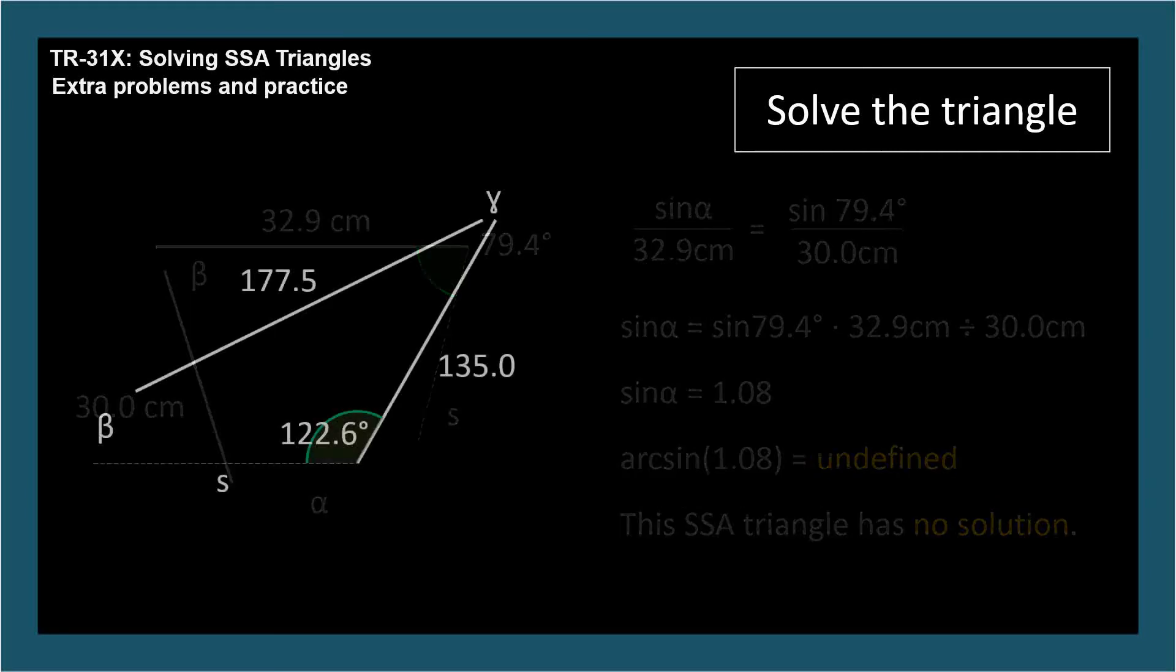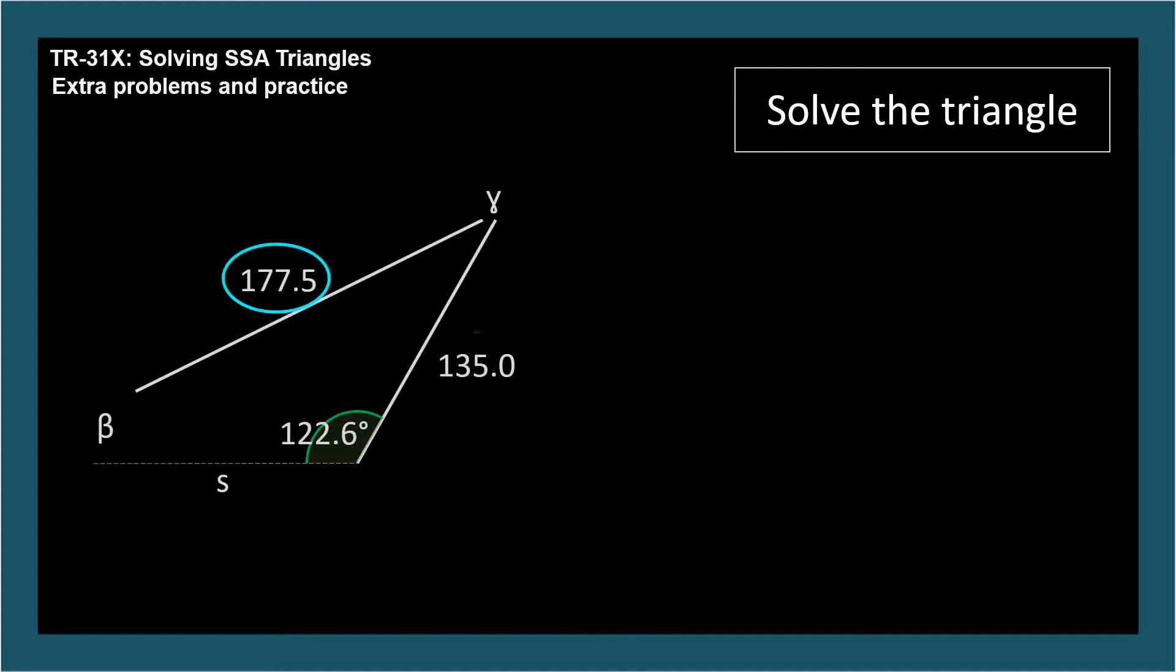Here's another. We're given side-side-angle. We need to find two angles and a side. You might notice that our given angle, 122.6 degrees, is obtuse. Since a triangle can have at most one obtuse angle, we aren't going to find a second solution to this triangle with an obtuse version of angle beta.